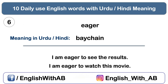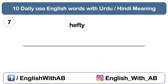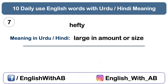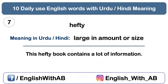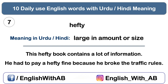On number seven we have 'hefty', meaning large in amount or size. If a book is very big, we can call it a hefty book. For example: This hefty book contains a lot of information. One more example: He had to pay hefty fines because he broke the traffic rules — meaning hefty fines refers to a large amount of money.